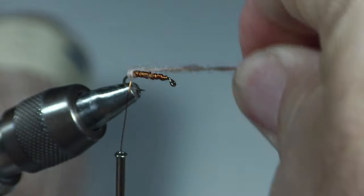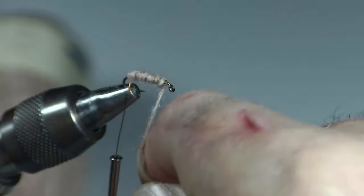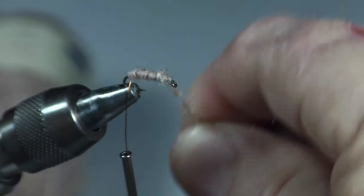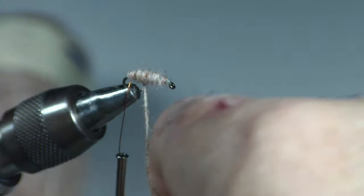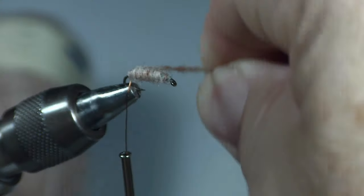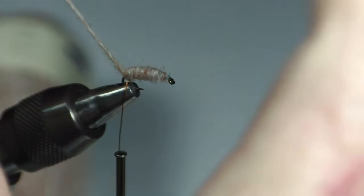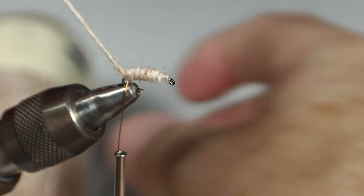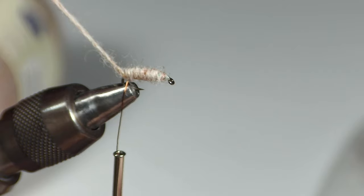And then what we do is we just wrap up and then back. Contrary to what you may see on some pictures of this bug, it is not a ribbed fly. And you can see, I didn't do any tapering there much at all. I'm just pretty much tying it even as it goes.